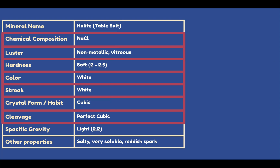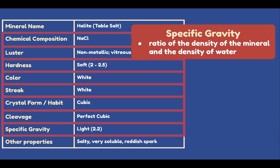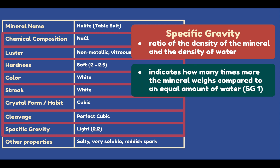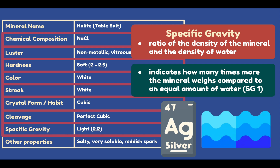Next, we have specific gravity. Specific gravity is the ratio of the density of the mineral to the density of water. This parameter indicates how many times more the mineral weighs compared to an equal amount of water, which has a specific gravity of 1. For example, silver has a specific gravity of 10, meaning a bucket of silver would weigh 10 times more than a bucket of water.